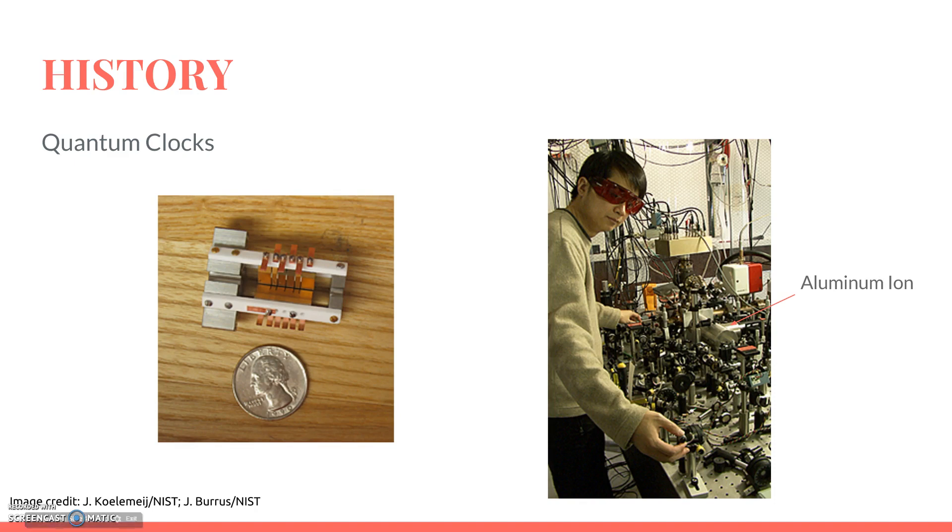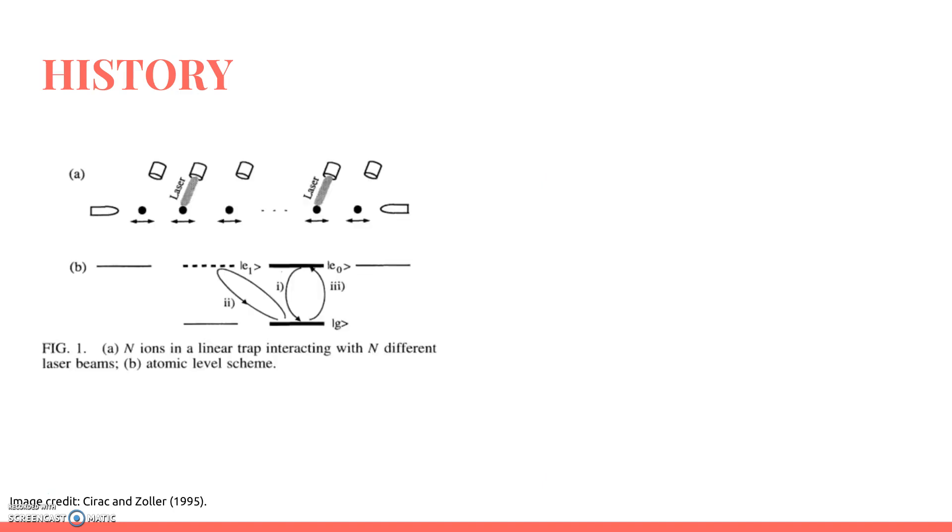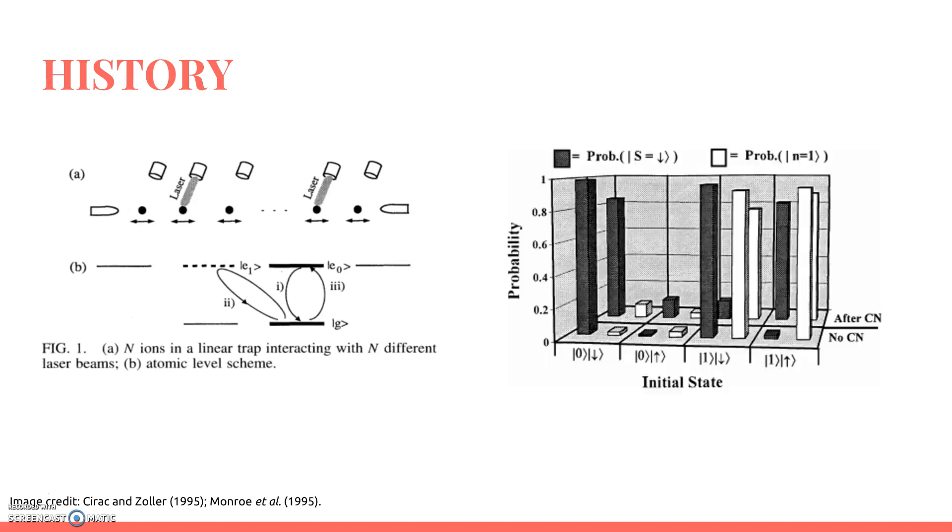However, the most important impact of ion traps has been in quantum computing. In 1995, Ignacio Cirac and Peter Zoller theorized the first implementation scheme for a controlled-not gate using an array of N trapped ions. Then, later that year, a similar scheme was physically realized by Monroe et al. at the NIST Ion Storage Group, after which research in trapped ion quantum computing took off worldwide.